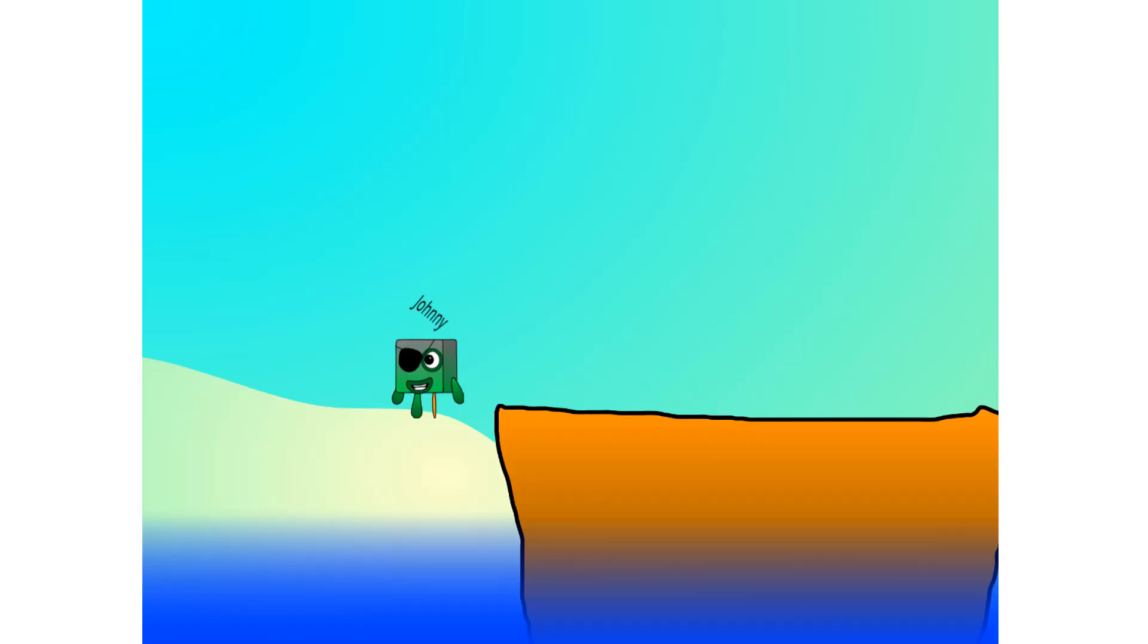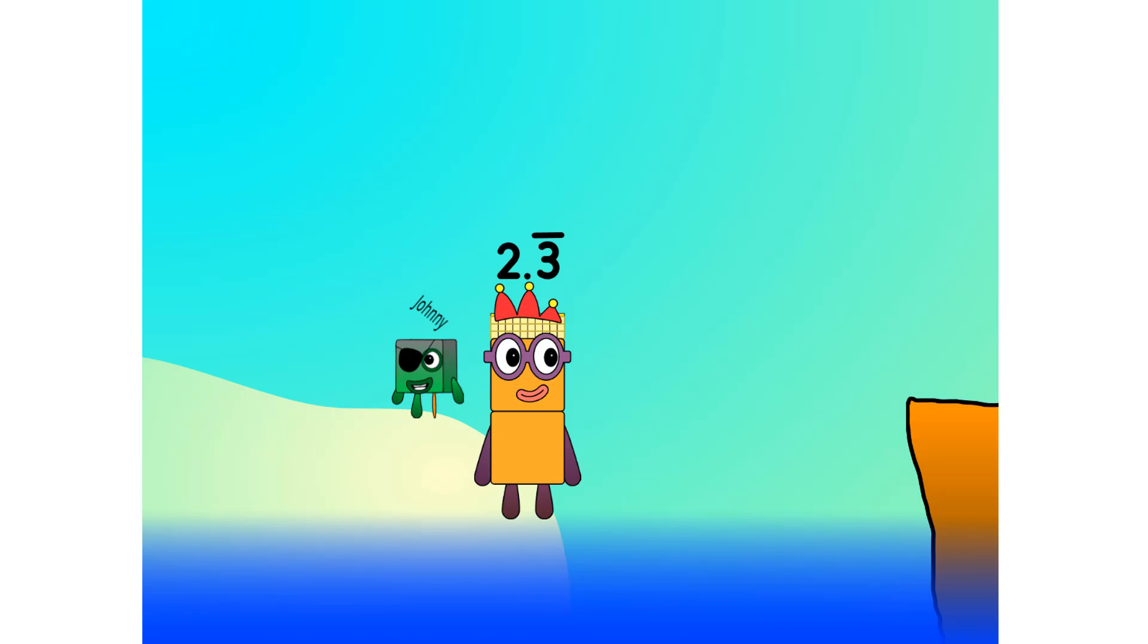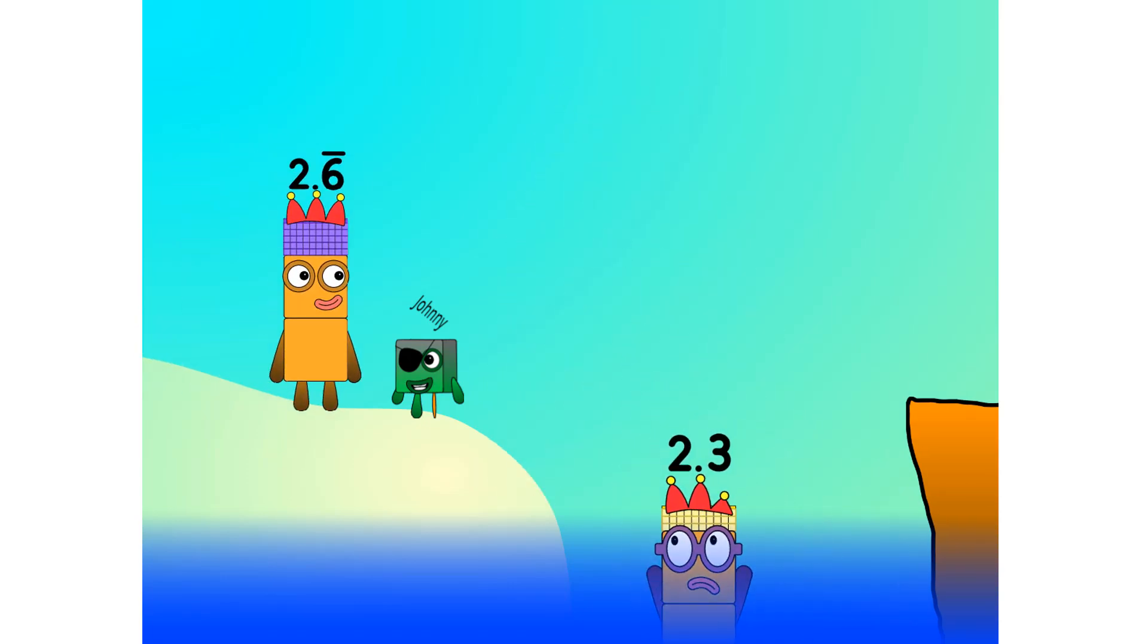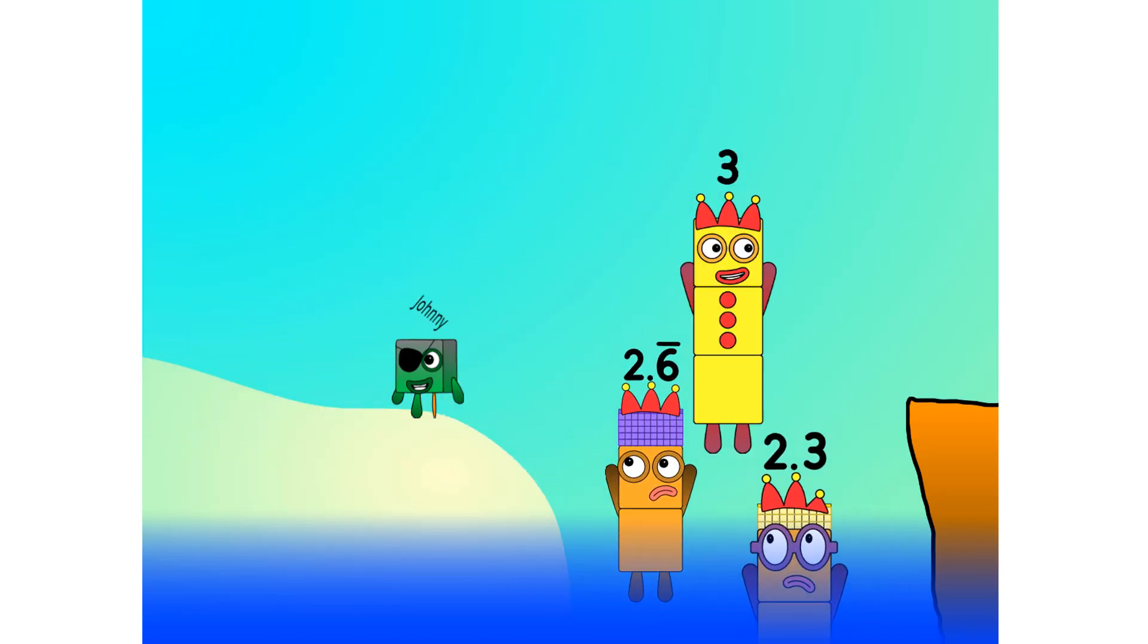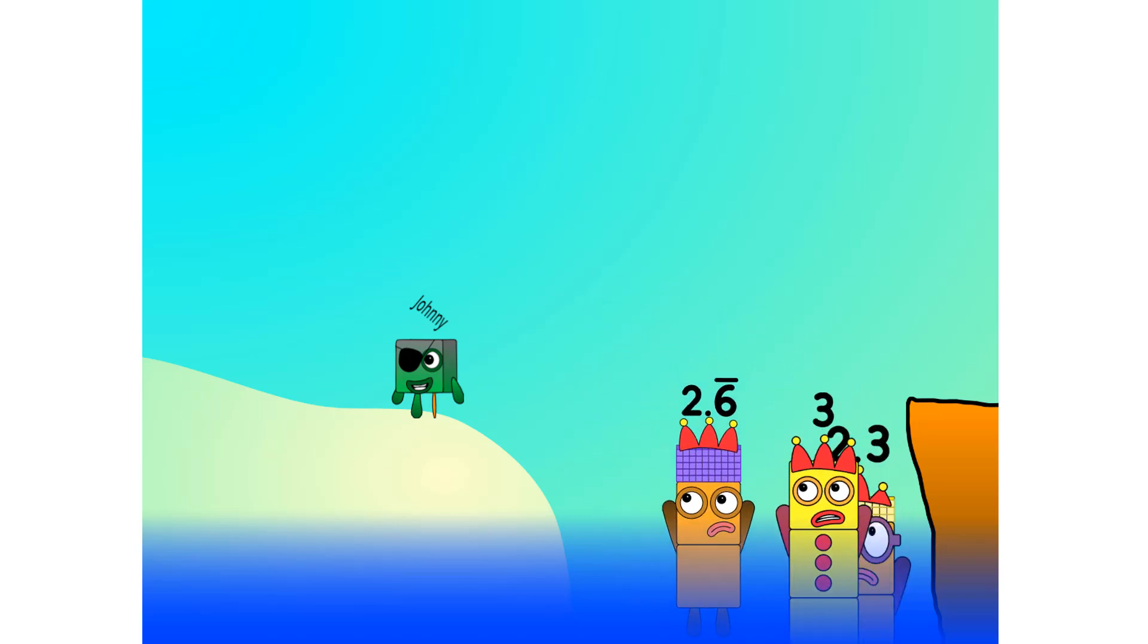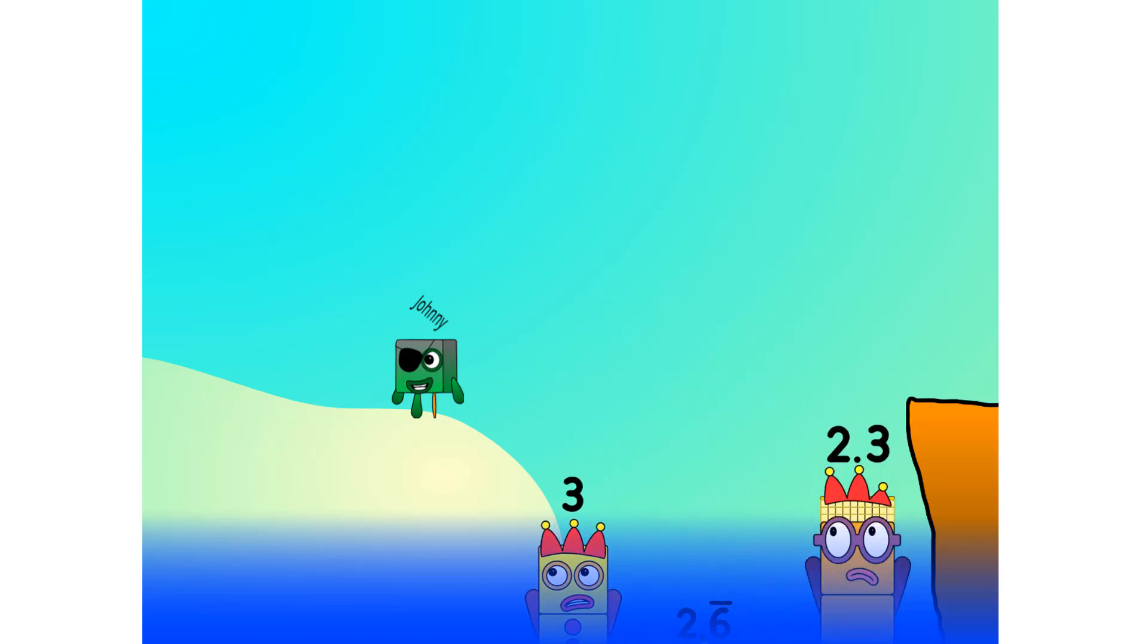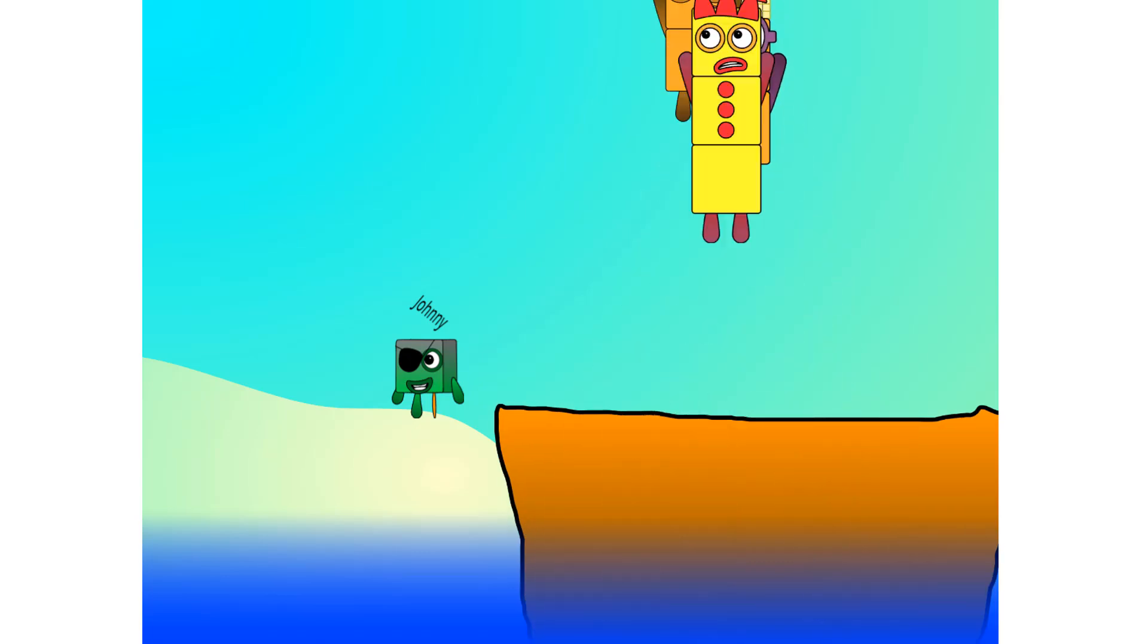All right me hearties, into the boat you go. I have room for 30 numbers. Number 1, 2, move along lads, 3, 4, 5, 6, 7, step lively, 8, smartly now, move along 9. Blow me down, numbers overboard! Hang on lads, it's a good thing you know how to swim.